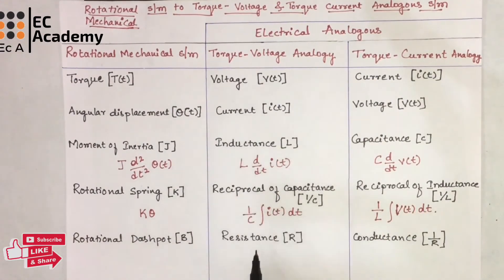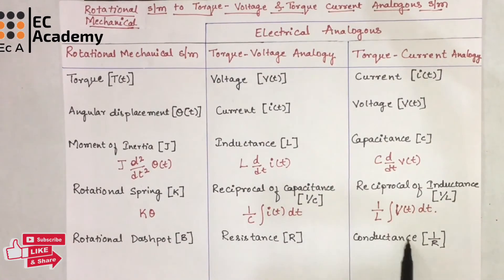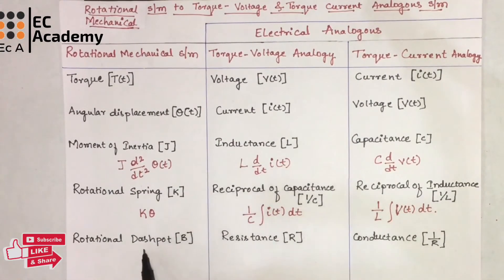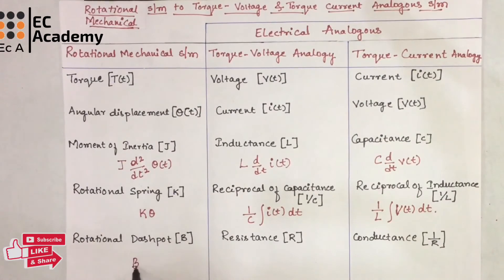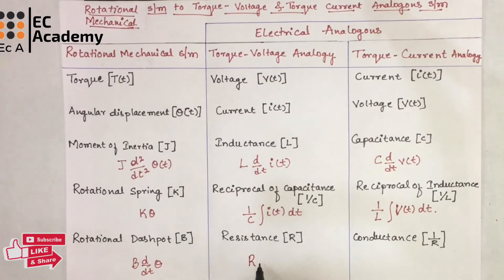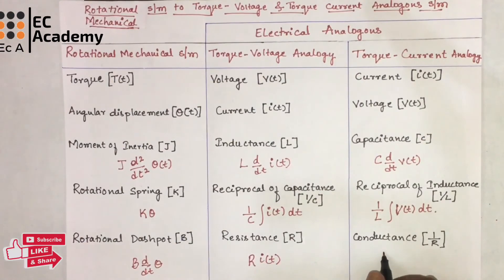In torque voltage analogy, resistance will be analogous to the dashpot. And in torque current analogy, conductance, which is the reciprocal of resistance, is analogous to the rotational dashpot. The differential equation for rotational dashpot can be written as B dθ/dt. In torque voltage analogy, we can write the equation as R·I(t). And in torque current analogy, we can write the equation as (1/R)·V(t).